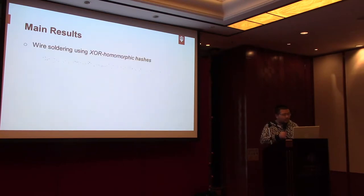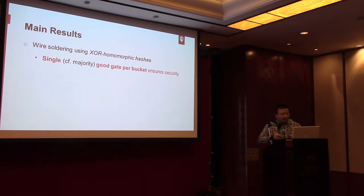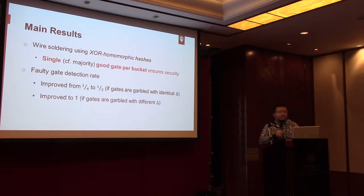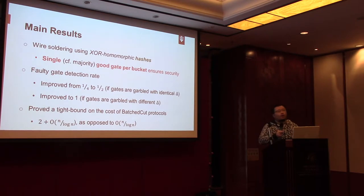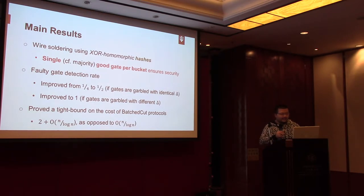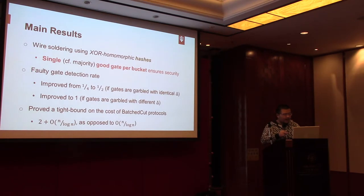Our main contribution is: we develop a method for wire-soldering using XOR-homomorphic hashes. We achieve security where only one single correct gate per bucket is needed, whereas other works require a majority. We also improve the bad gate detection rate from one-quarter to one-half, and to one in certain settings. Finally, we prove a lower bound: for any Lego-based protocol, no matter how large the circuit, you need at least two gates per bucket. Previously, people assumed an O(N) advantage was possible. In this talk, I will focus on the first contribution.